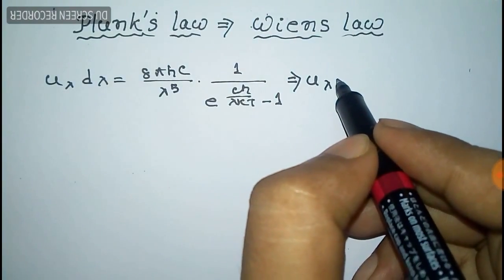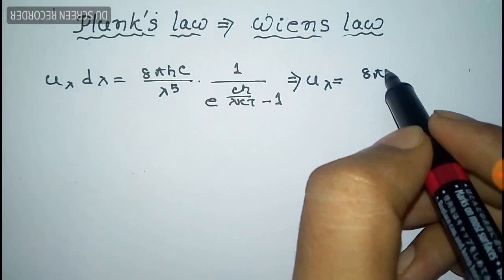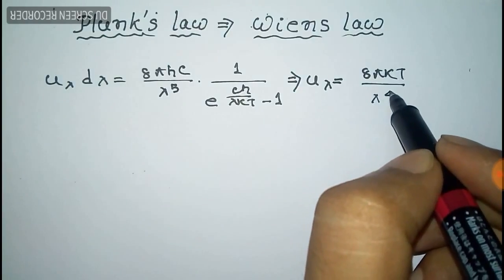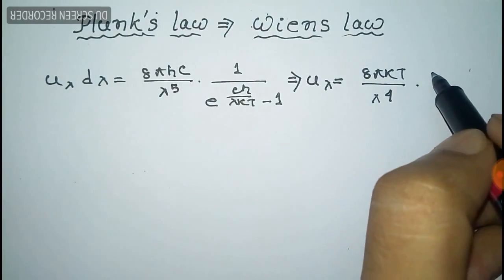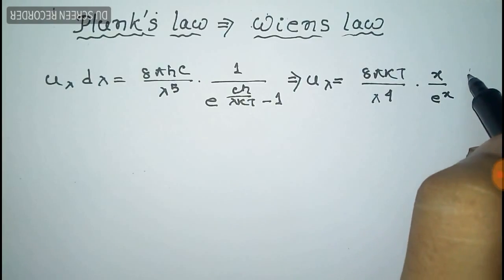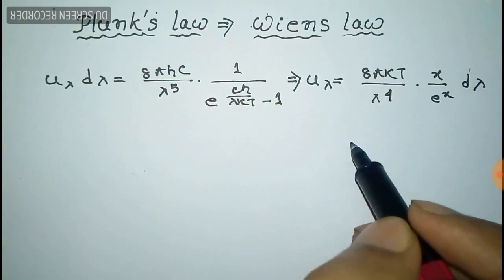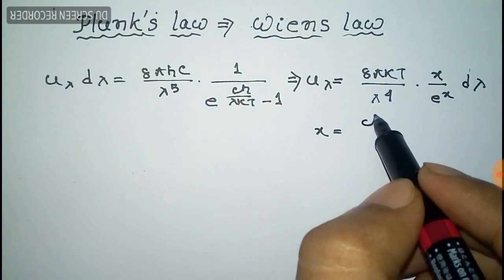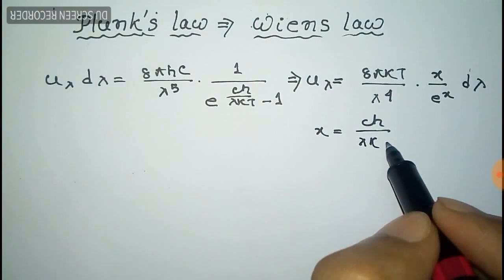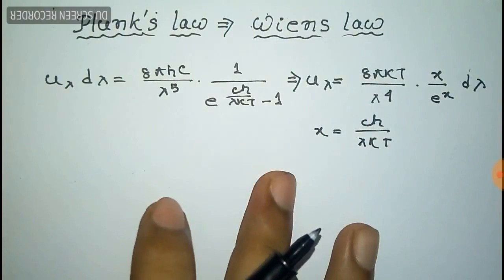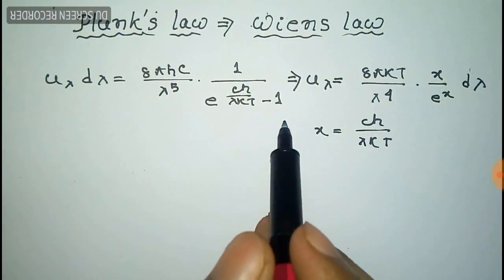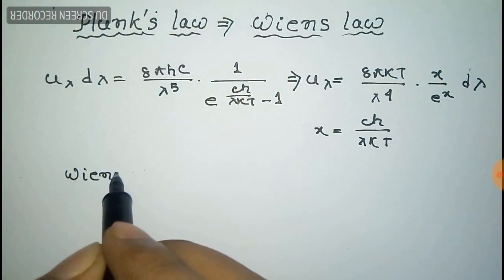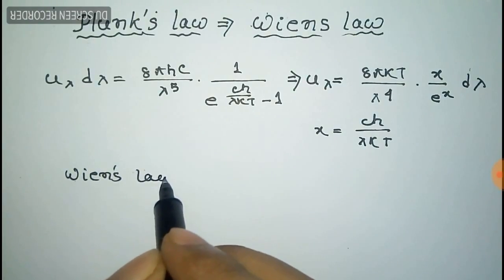From this we have to prove Wien's law, that is u(λ)dλ equal to 8πkT by λ to the power 4, times x by e to the power x, times dλ, where the value of x is hc/λkT.